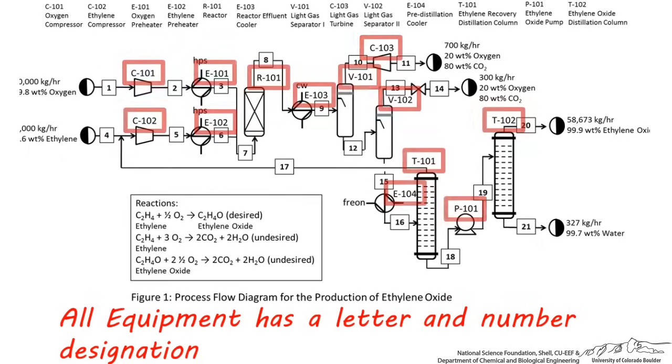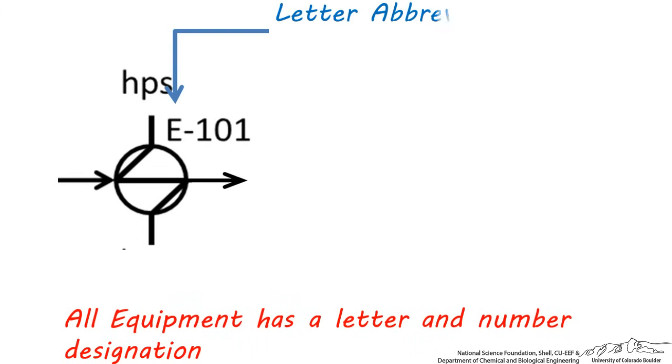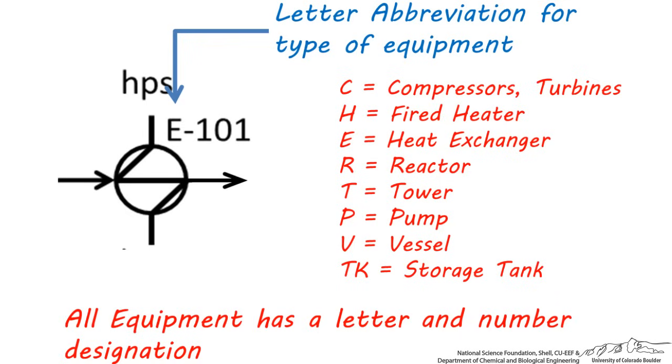As an example, let's look at Heat Exchanger E-101. The letter is the abbreviation for the type of equipment, whether it's a compressor, tower, heat exchanger, reactor, turbine, or furnace. All heat exchangers are designated by the letter abbreviation E. Just to review, the letter designations for all pieces of equipment are shown here.